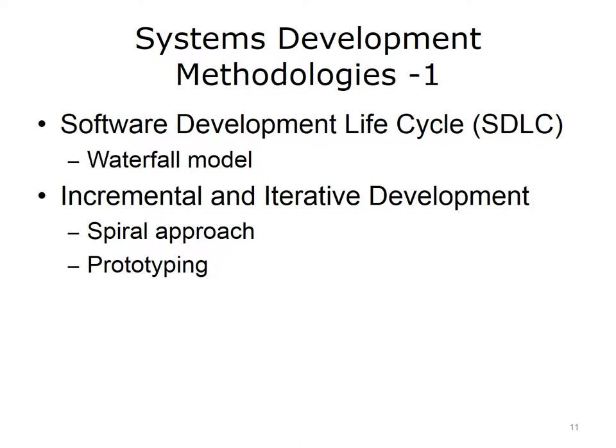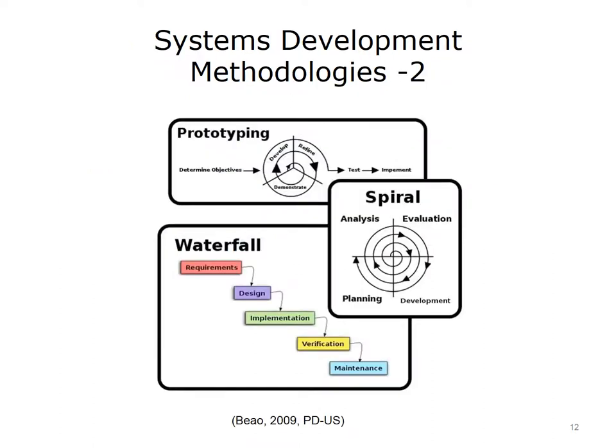Incremental and iterative development methods attempt to address the inflexibility of the waterfall method, by focusing on smaller sub-problems and/or by repeating stages to allow for more flexibility. For example, the spiral approach consists of a series of iterations and revisions based on user feedback. Prototyping refers to developing successively more complex prototypes of the system until the system is built. This process can be used in tandem with the spiral approach so that each prototype is evaluated, which then affects the design of the next prototype.